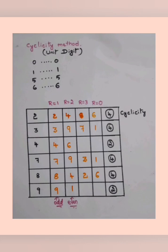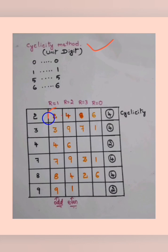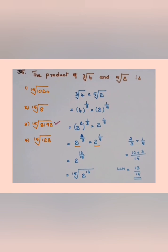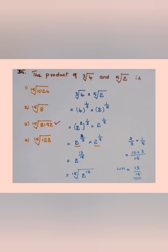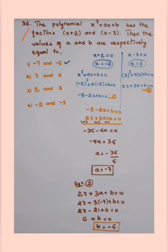For remainder 1, the unit digit is 2; remainder 2 gives 4; remainder 3 gives 8; and remainder 0 follows a special case. For cyclicity 2 (odd/even rule), further rules apply. If you want more problems on the cyclicity method, comment below. According to our problem, the answer must have 2 in the unit place. So for 2^13 the answer is 8192, which ends in 2. Hence 8192 is the correct answer.